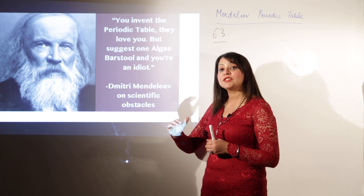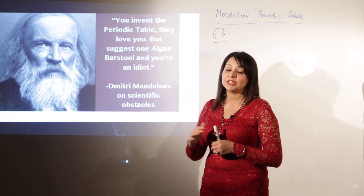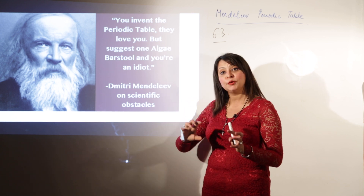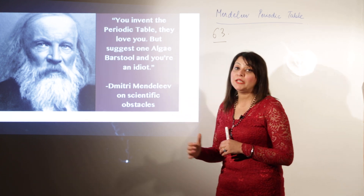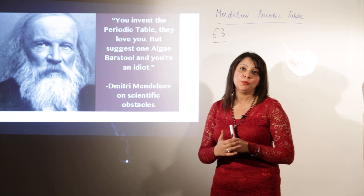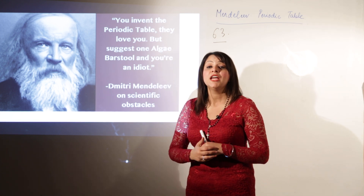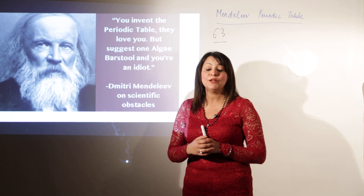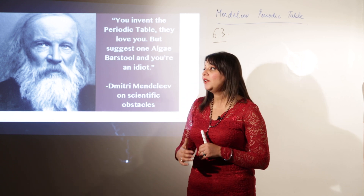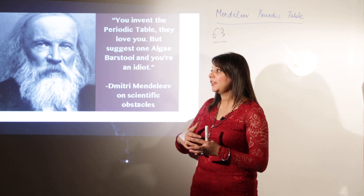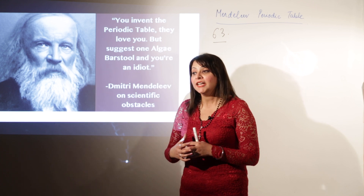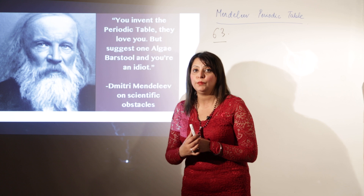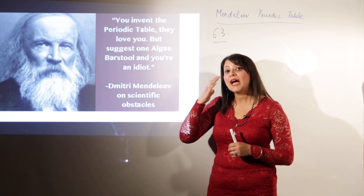He was able to classify those 63 elements in a tabular form that was clearly understood by all. He even made a very bold prediction — he predicted the existence of certain elements that had not yet been discovered. His classification was done in a very practical way.